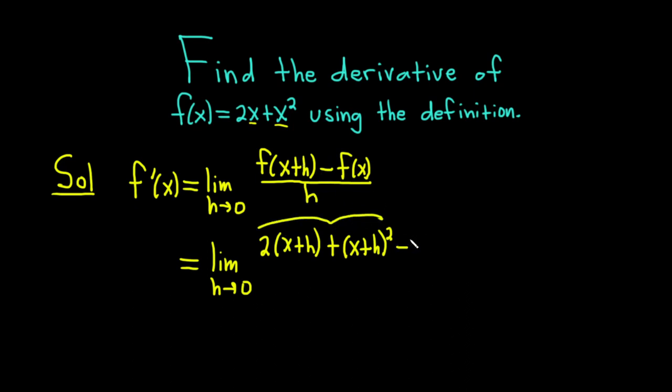Minus, and then we have f of x. So we do need parentheses because it's two terms. So parentheses 2x plus x squared. And all of this is being divided by little h.